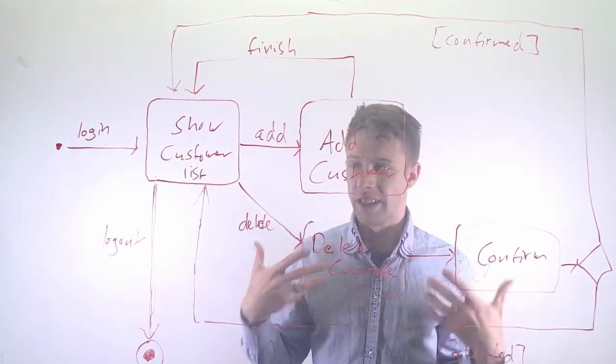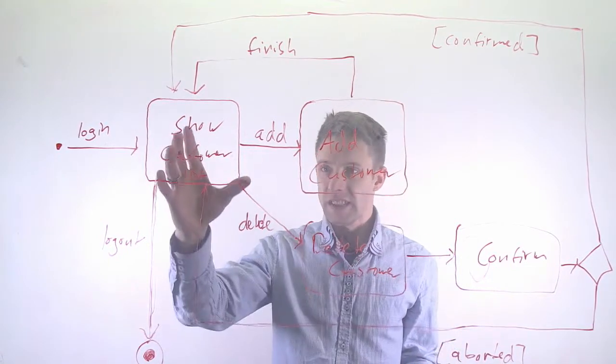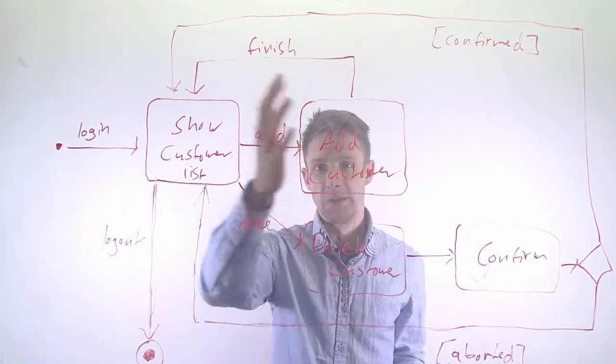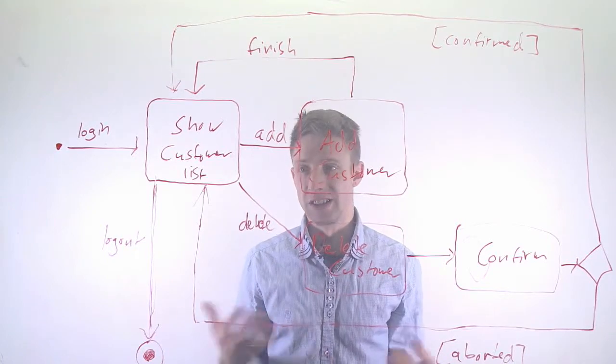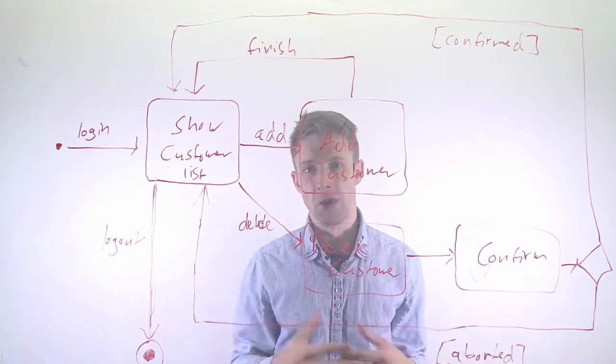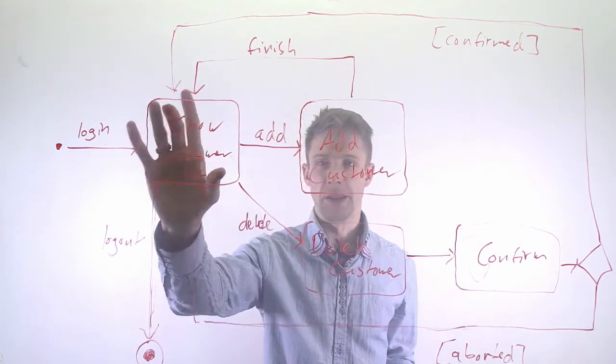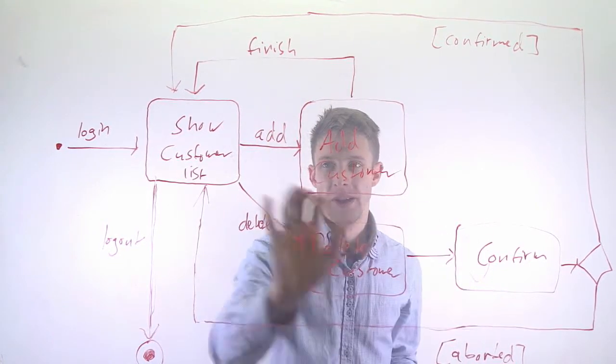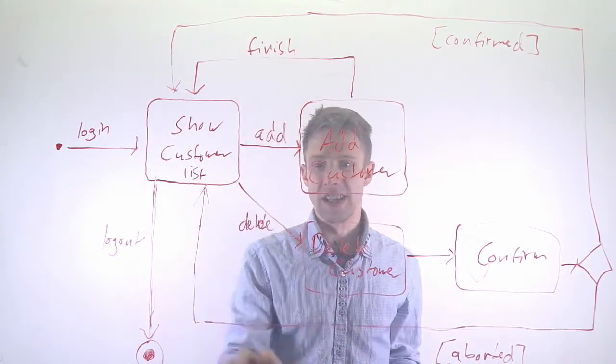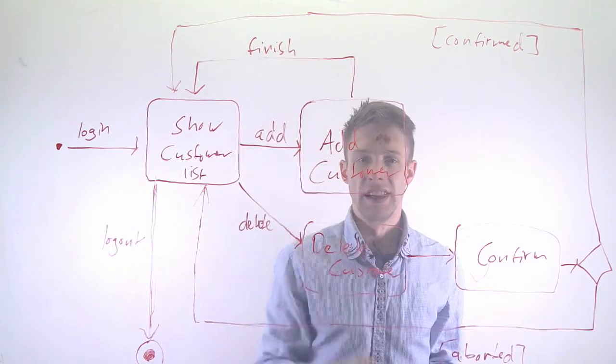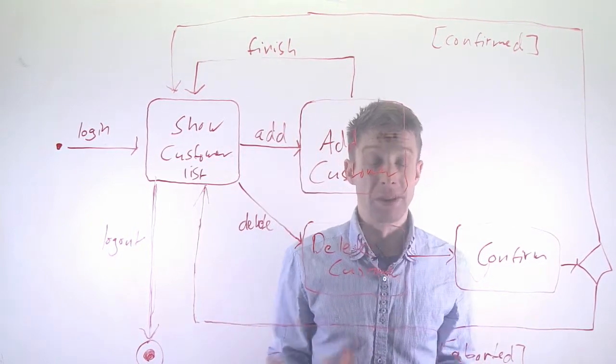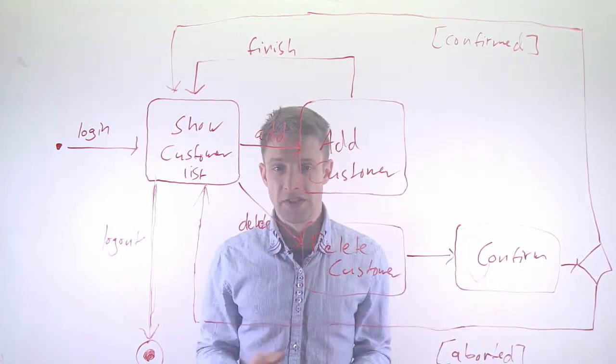So what could we theoretically do with this? First of all, of course, we have to be able to understand this, so it has to follow a certain notation, and we have to have this in a modeling file so that we can, for example, get all the states, we know what the relations are between the states, we know the actions, so we can start processing this automatically.